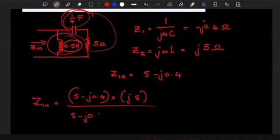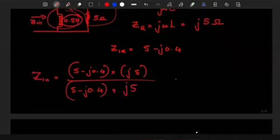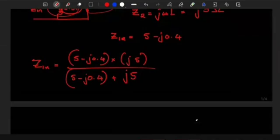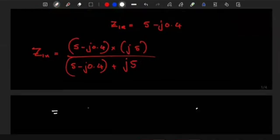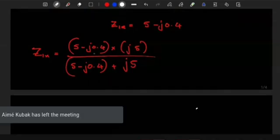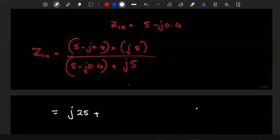So the numerator when you multiply that's going to be j 25. Then this is going to be j and j that will turn this negative into a positive, but 5 and 0.4 it will be 2.